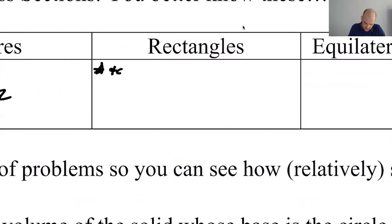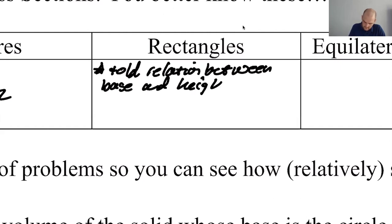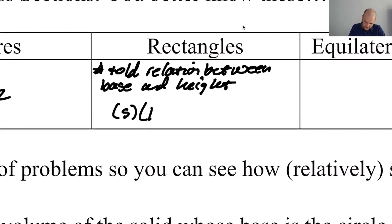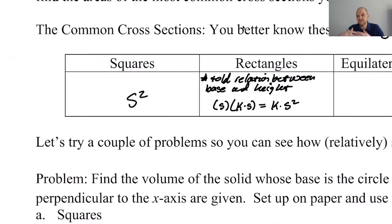So you'll be told relation between base and height. But in general, this is going to end up like K times S squared, which is really, let me explain that a little more. It's really going to be S times, you know, K times S. So you get K times S squared. So it's really like you just have a square that you've kind of like modified somehow. You've scaled it.